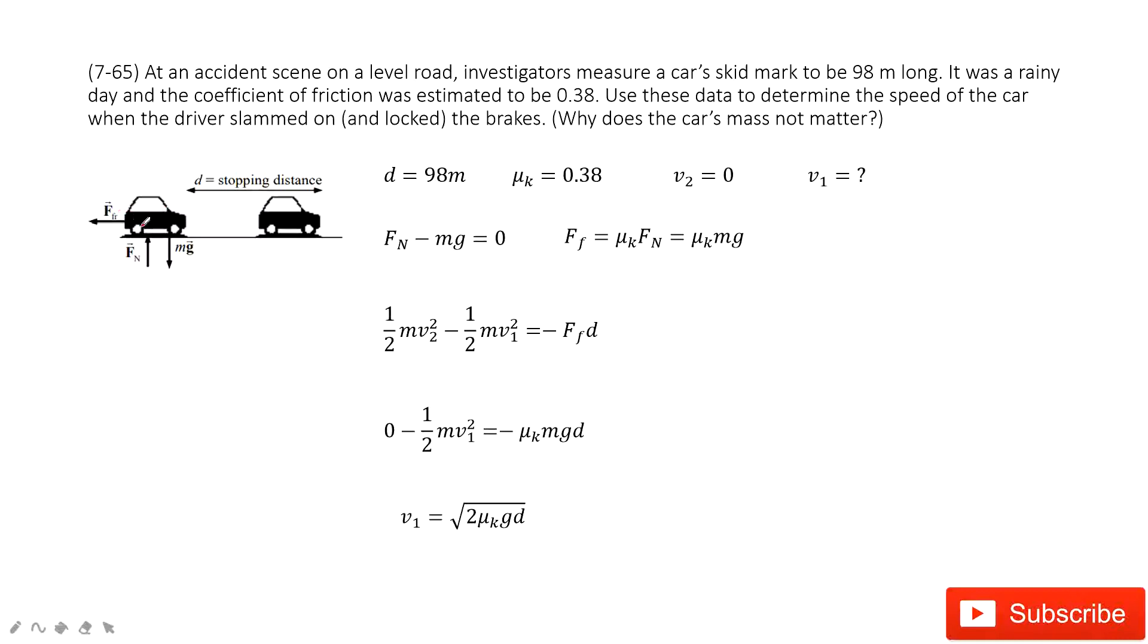Because initially we have a car, the velocity is v1, and then it stops and becomes stationary at 0. So the final velocity is 0, v2 is 0, right?